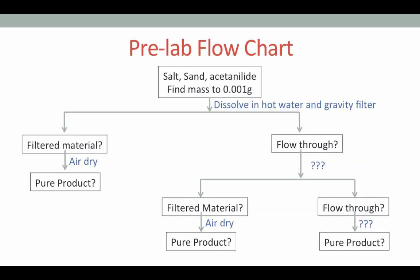The pre-lab flowchart looks like this: the boxes indicate substances or materials and the arrows indicate steps. So in the first box we have our mixture containing salt, sand, and acetanilide. Weigh your mixture and determine its mass to the nearest 0.001 gram. You will then dissolve this in hot water and gravity filter it. What will be in the flow through? What will be in the filtered material? Fill in these boxes. The filtered material will be allowed to air dry and then what pure product would you have left? On the other side with the flow through, what would be your next step to separate the components in the flow through or the filtrate? What would be the filtered material and what would be the flow through of that process?